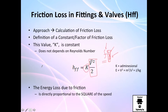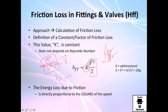Imagine you have a pipe with a valve and want to calculate the friction loss. They apply the mechanical energy equation between the inlet and outlet of the valve, measure all the energy lost, and check how that energy loss depends on velocity. They get this K constant. The interesting part is that the value of K does not depend on the Reynolds number — K is constant regardless of flow speed.